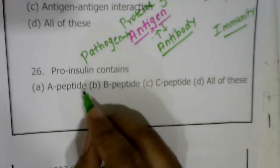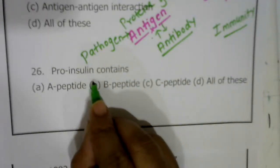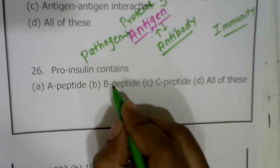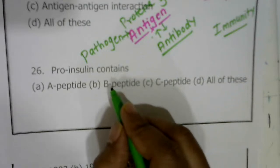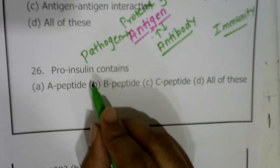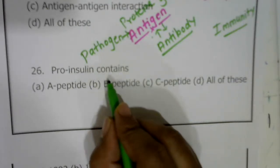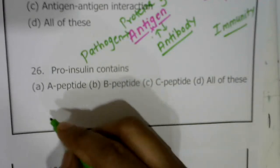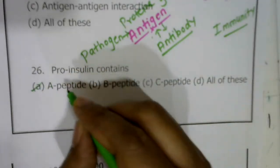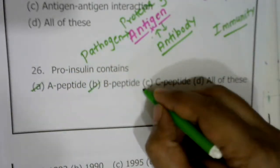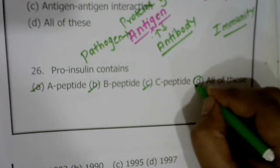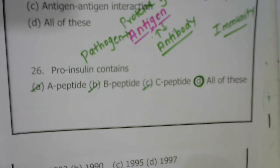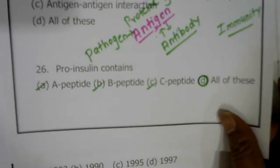Question twenty-six: what does pro-insulin contain? Pro-insulin, also called pro-hormone, contains three chains: A peptide chain, B peptide chain, and C peptide chain. The correct answer is all of these.